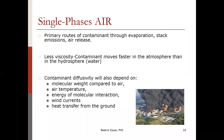When talking about how these substances move in air, air is the primary route of contaminant spread through evaporation, stack emissions, and air release. Contaminants move faster in the atmosphere than in water due to lower viscosity, though this can vary with humidity. Other variables that affect how contaminants diffuse through air include molecular weight compared to air, temperature, the energy of molecular interactions, wind currents, and heat transfer from the ground.